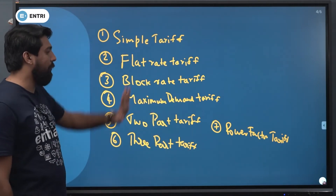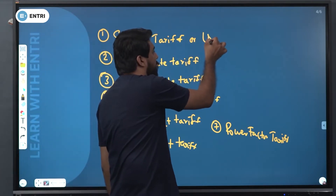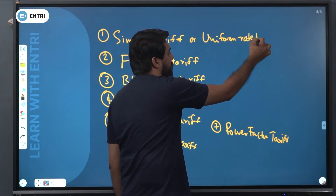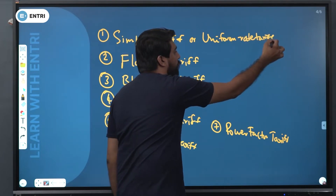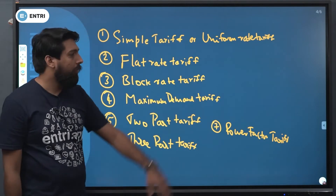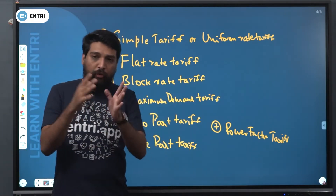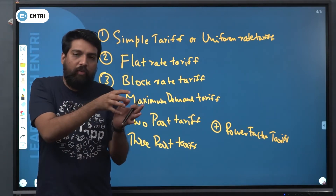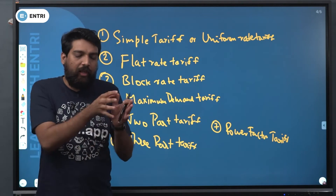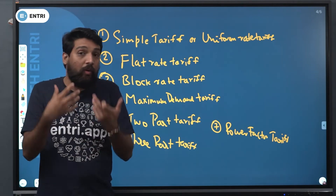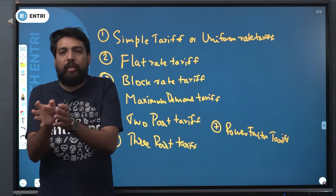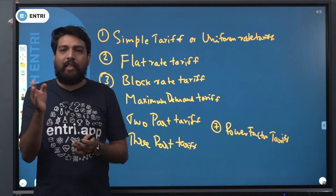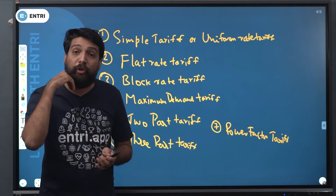The first is the simple tariff, also called uniform rate tariff. If you use a specific amount of energy, you are charged a specific uniform rate. The charge per unit is the same regardless of consumption. That is uniform rate.